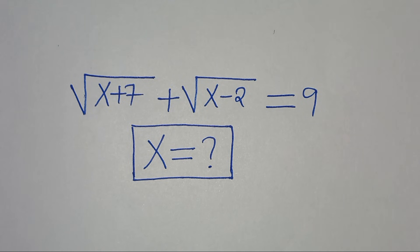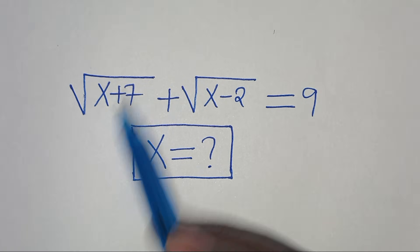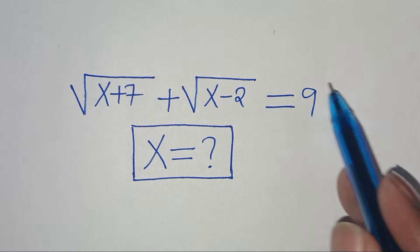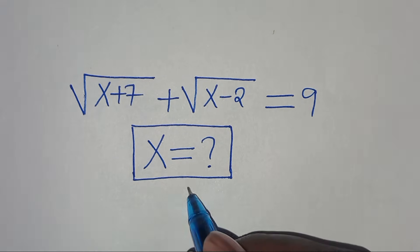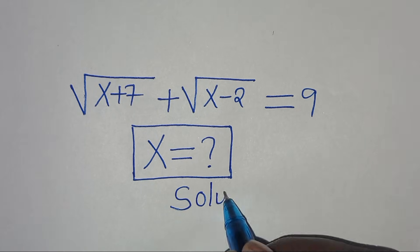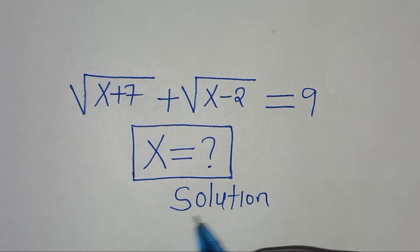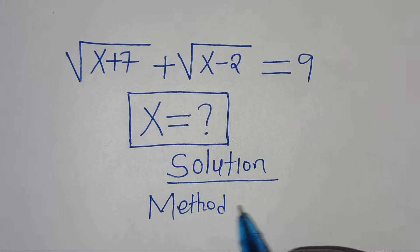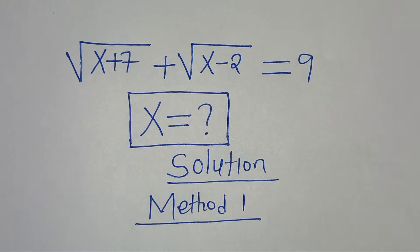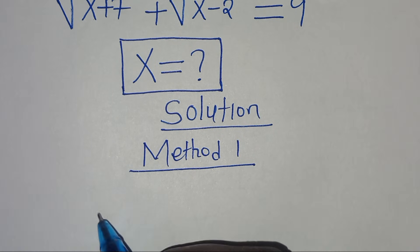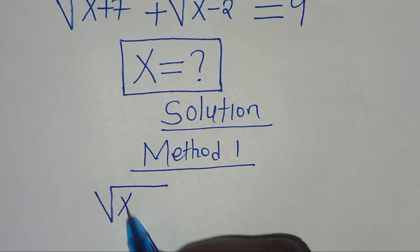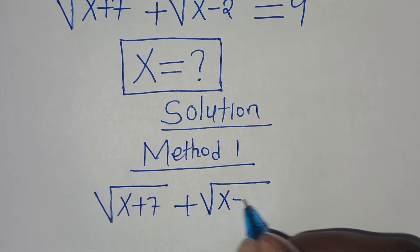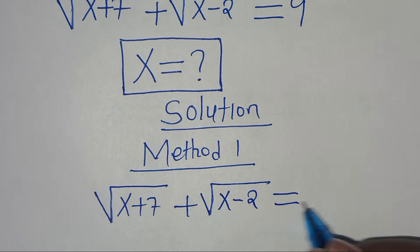Hello everyone, you're welcome to solve this math problem: the square root of x plus 7, plus the square root of x minus 2, is equal to 9. What is the value of x? We are going to solve this math problem by applying two methods. Let's start with Method 1.